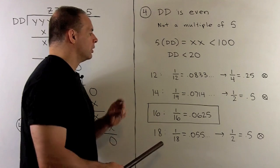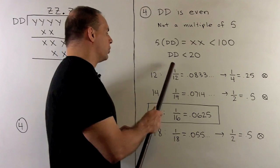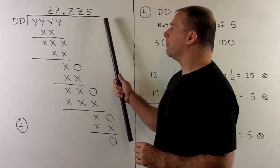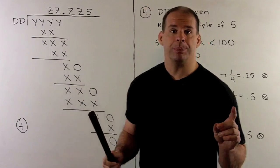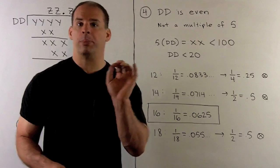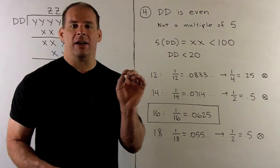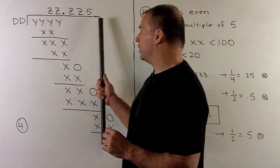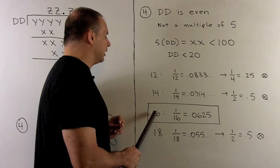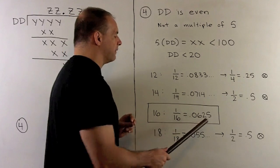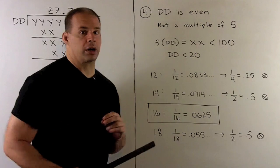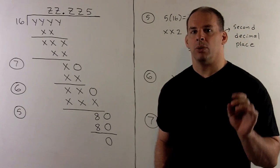To eliminate candidates, we examine their decimal expansions. 1 over 12 gives 0.083 repeating — to get three decimal places we'd need to remove the factor of 3, leaving at best 0.25 or 0.5, which can't produce three genuine decimal places. A similar argument eliminates 14 and 18. That leaves 16: 1 over 16 gives four decimal places ending in 5, and multiplying by integers can yield three genuine decimal places. So the divisor is 16.